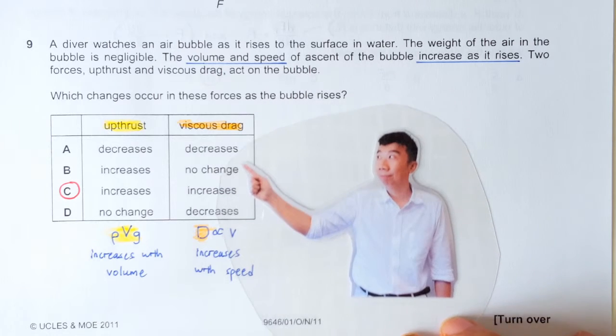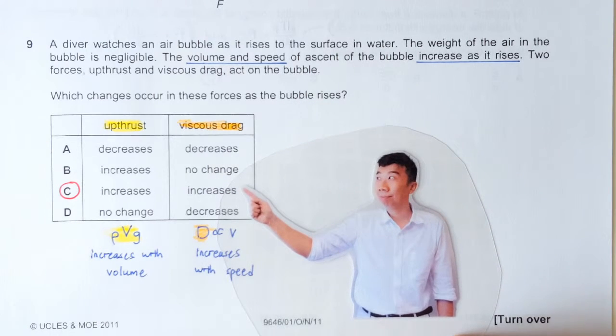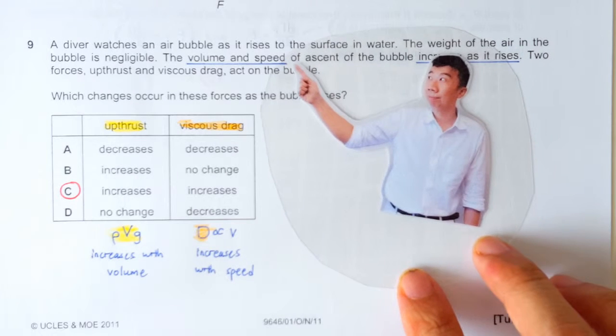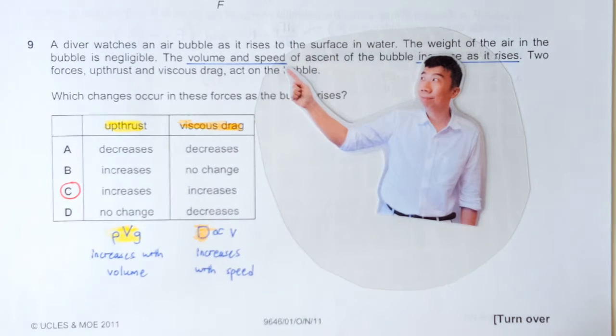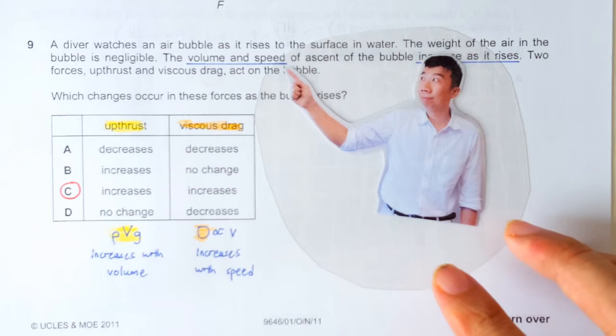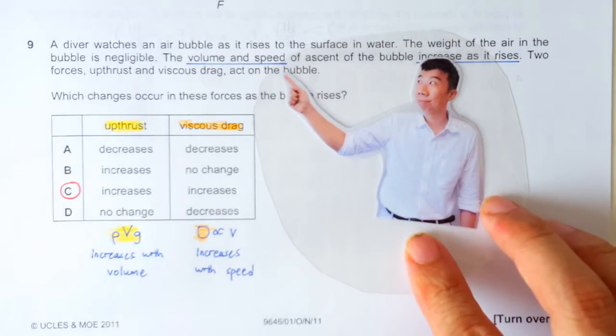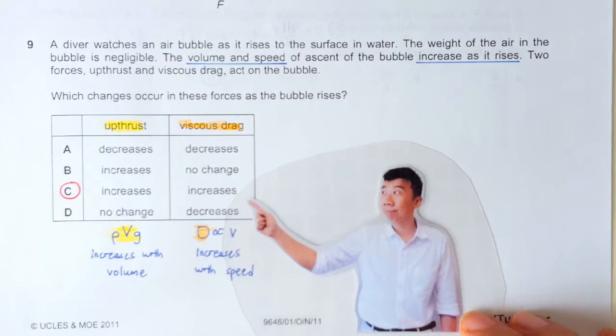As for viscous drag, viscous drag depends on how fast you're pushing against the fluid. So if the bubble travels faster and faster, you'll be pushing against the water harder and harder, and therefore the viscous drag is also going to increase.